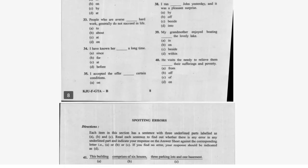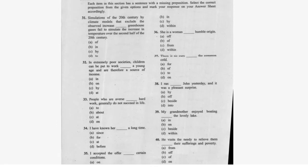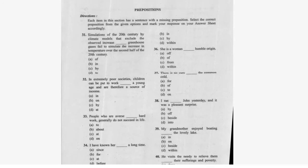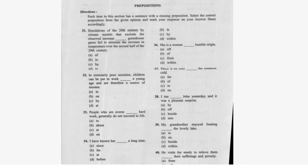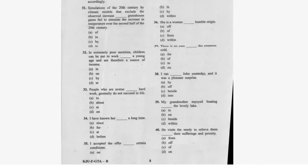Question 34: 'I accepted the offer on certain conditions' — option A, using 'on'. Question 35 is next. Question 36: 'She is a woman from humble origin' — uses 'from'. Question 37: 'There is no cure for the common cold' — uses 'for'.